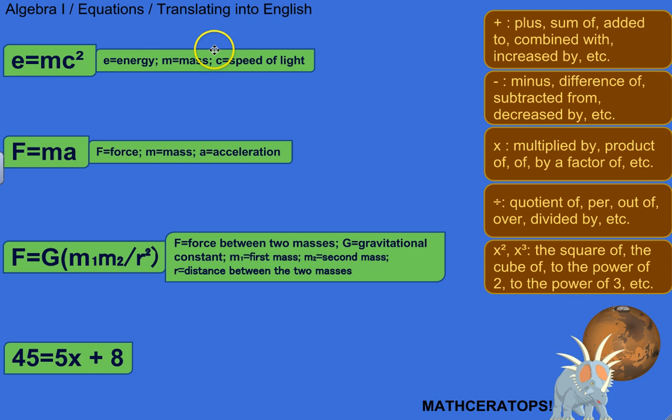So a way we could translate this is - first of all, what operations are happening here? M and C are being multiplied. Two variables that are just next to each other means they're being multiplied. And then C is being raised to the power of 2, or it's squared. So what we could say is something like: energy is mass times the speed of light squared. Or we could say: energy is the product of mass and the square of the speed of light. That would be another valid way of describing it.